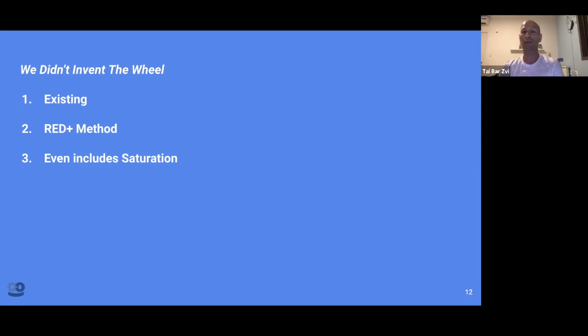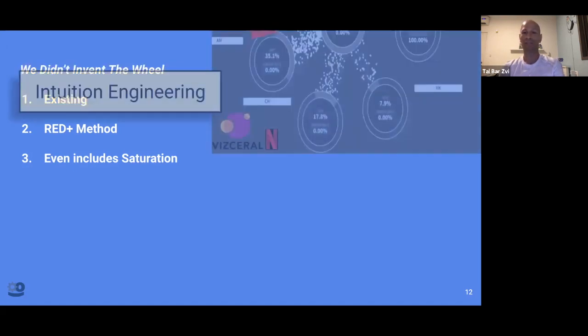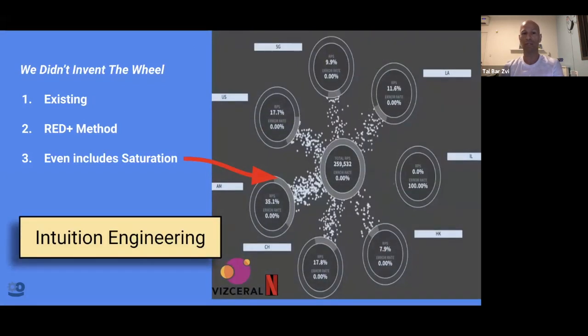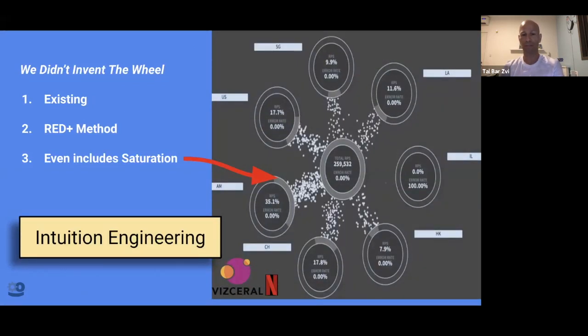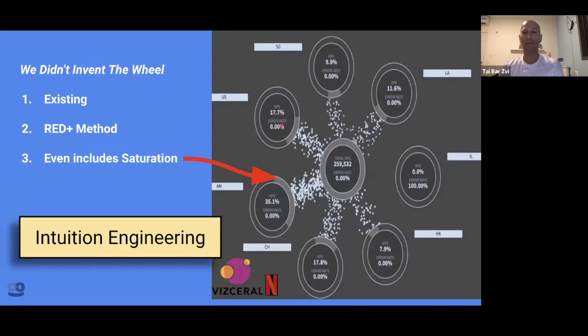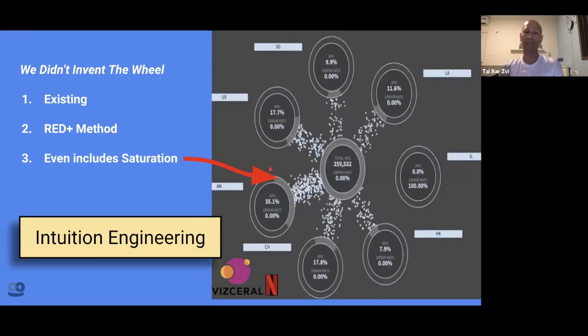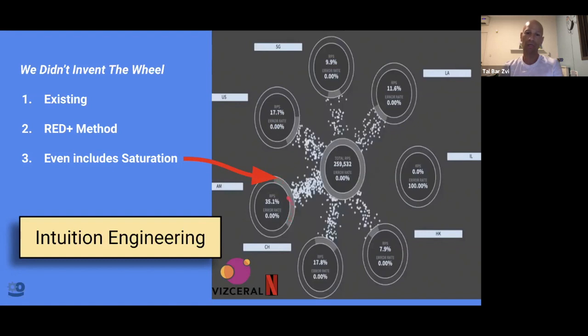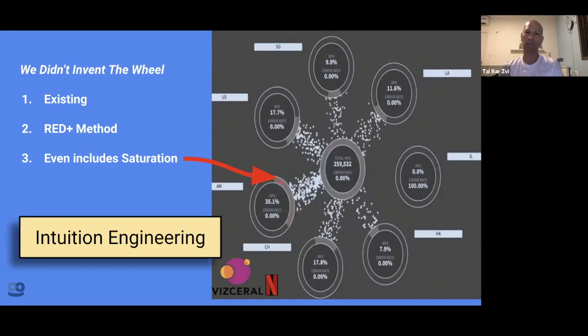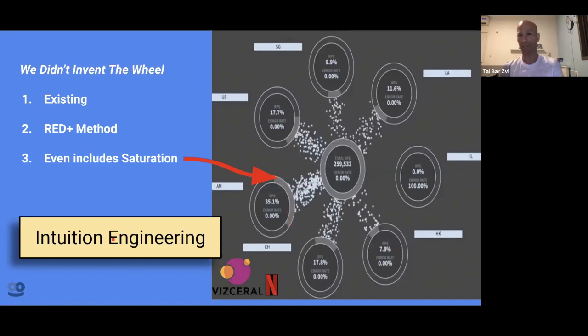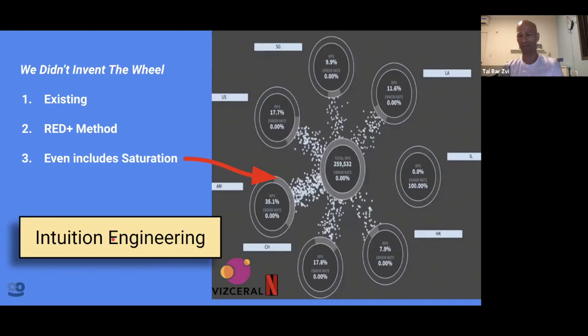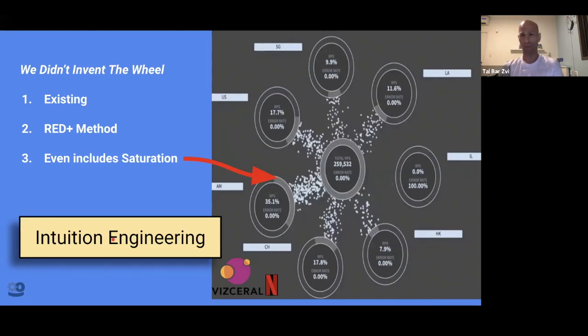We didn't invent the wheel. We have existing places in Taboola that use that. For instance, this amazing visualization from Netflix. You can see here the error percent, the error rate. You can see here even the saturation. You see here how much that's the fourth, the fourth metric. You see here how much is saturated. People use that already to have it that clear that you will have intuition when you look at graphs.